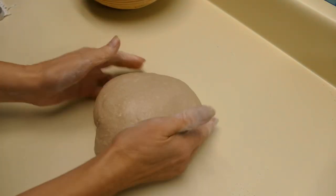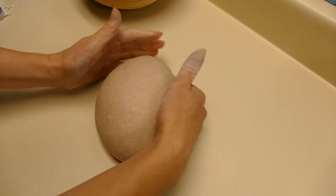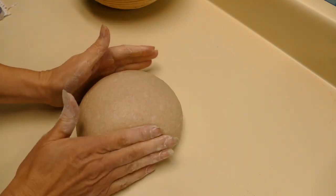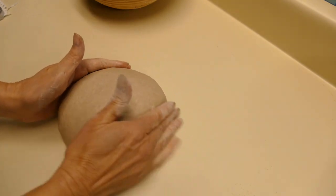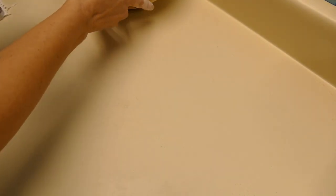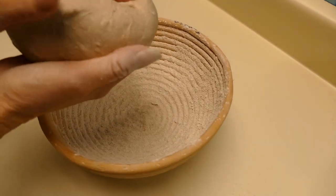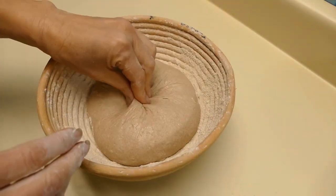So we'll do a final rounding. Nice loaf. It'll be very interesting to see how this turns out. We'll turn that upside down and place it in there.